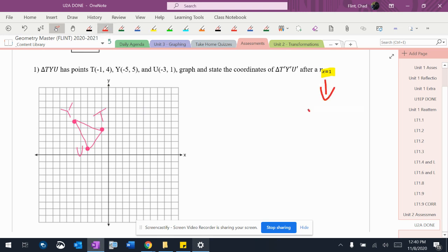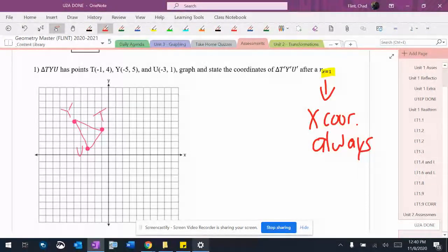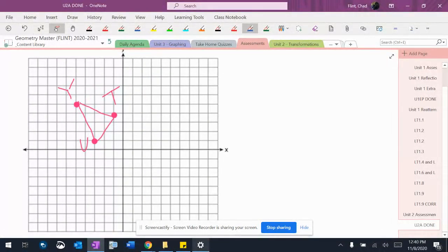Remember that this means the x-coordinate is always 1, which means that if I'm not sure where this line goes, go to the graph, plot a couple points that has an x of 1 first, or three of them, and then draw that line in there.